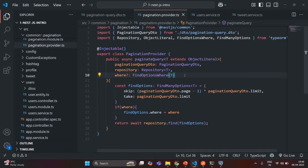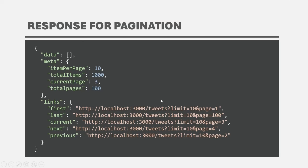The pagination logic is working as expected. The only thing pending is we want the response in a certain format. Whenever a user requests paginated data, the response should have a data property containing the array of results, a meta property with some metadata, and a links property with important links. Currently from Postman we are only getting a plain array of tweets with none of those properties. Let's see how we can achieve that in our coming lectures. This is all from this lecture — if you have any questions, feel free to ask. Thank you for listening and have a great day.